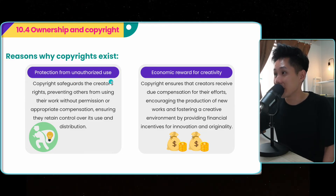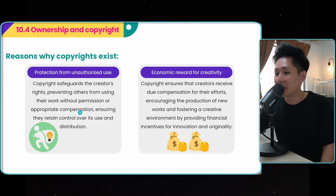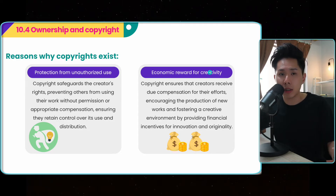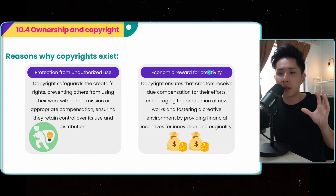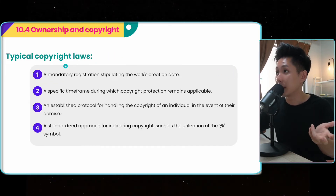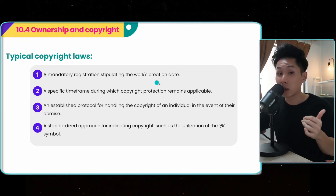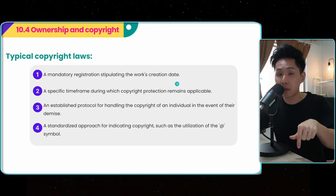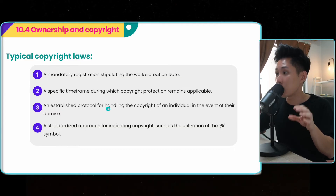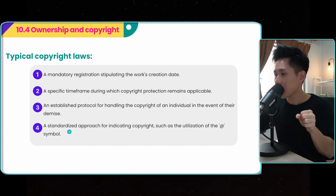Copyright exists for protection from unauthorized use, so that we don't use something others have created without permission. The second reason is to provide economic reward for creativity. To create something like a software video, articles — they require a lot of time. Time is basically someone's life; they spend their life to create it, so they should get a reward. One example of a typical copyright rule: a mandatory registration stipulating the work creation date — you have to register it. A specific time frame during which copyright protection remains applicable. An established protocol for handling the copyright of an individual in the event of their death. And a standardized approach for indicating copyright, such as the utilization of the copyright symbol.